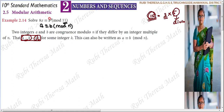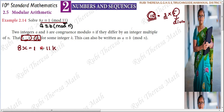Here b is the remainder, which is 1. The divisor chosen is 11. So 8x minus 1 will be equal to some multiple of N, where N is 11. So it becomes 11k.